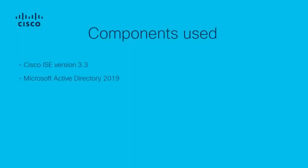The process is similar across all ISE versions, provided that the ISE version and the Active Directory version are compatible. In this video, I am using ISE version 3.3 and Microsoft Windows Active Directory version 2019. ISE version 3.3 supports Windows Active Directory from version 2012 to version 2025.